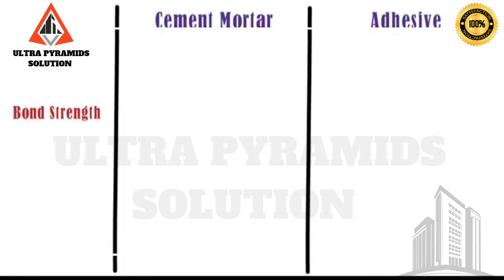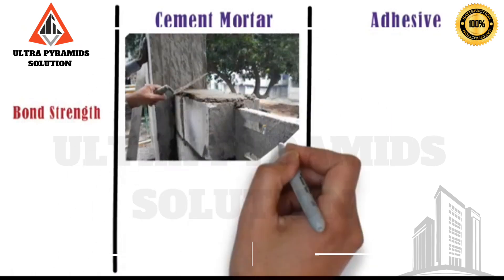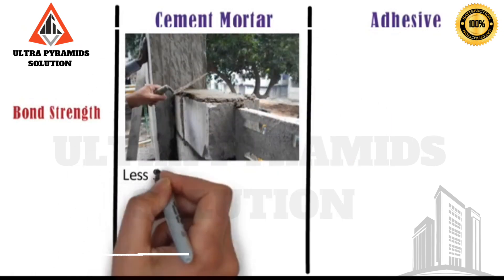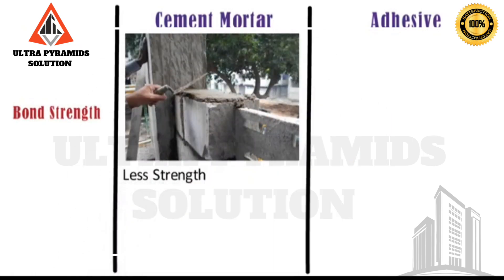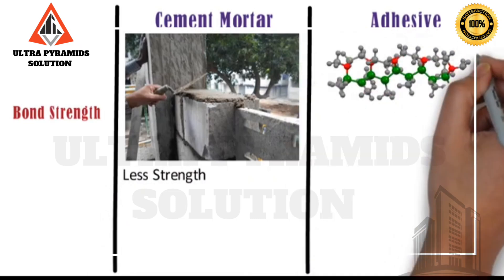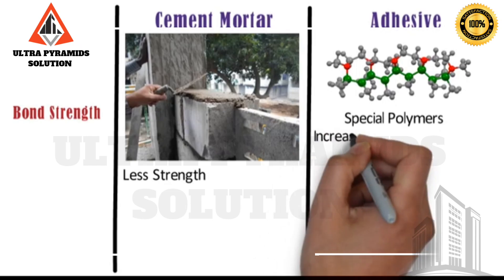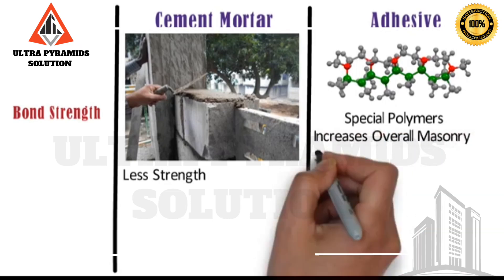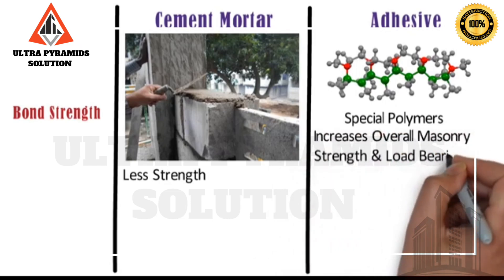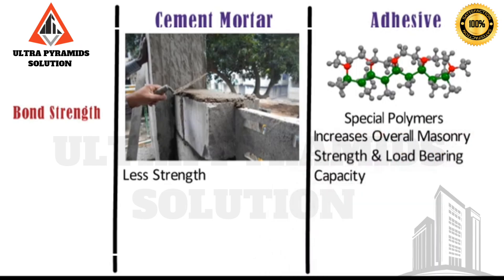Bond strength: The bond strength of cement mortar is less as compared to AAC block adhesives. Whereas, AAC block adhesives contain special polymers which give high adhesive strength, ultimately increasing overall masonry strength and load-bearing capacity.